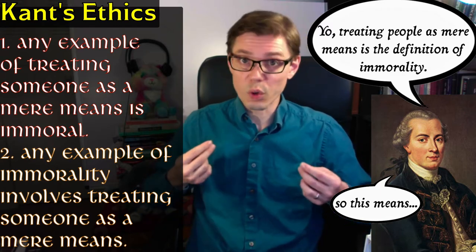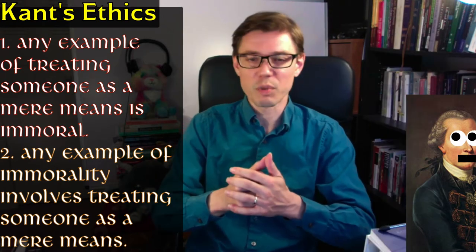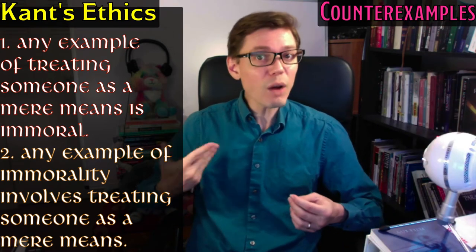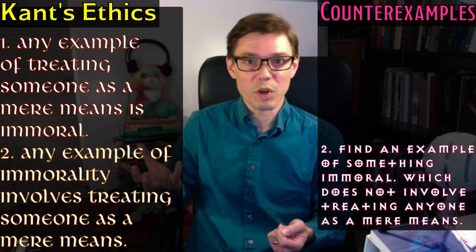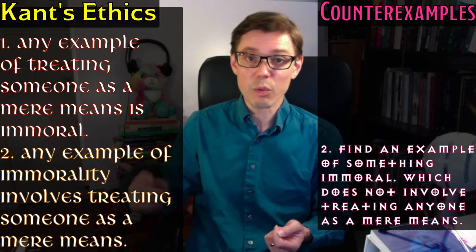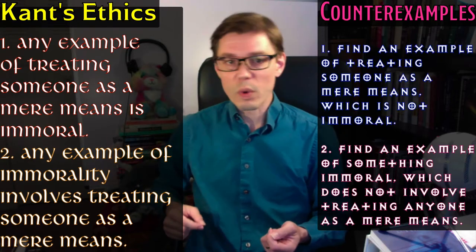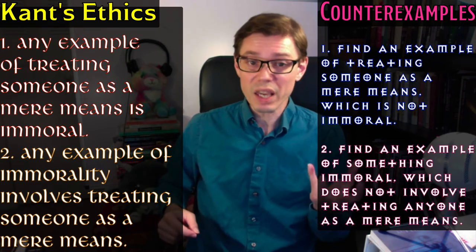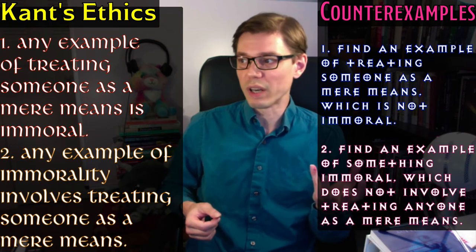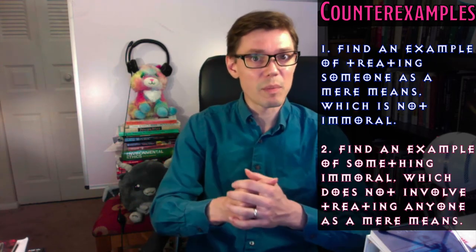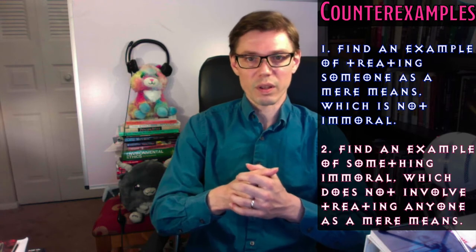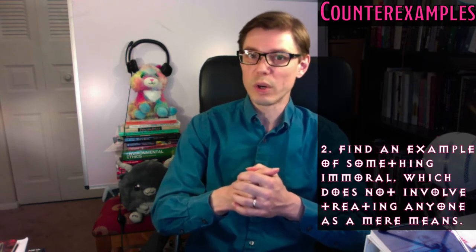So if we want to object to Kant's ethics, or at least to his conception of what's immoral, we can find counter-examples. We can try to think of a case of something immoral but that's not an example of treating anyone as a mere means — it's just immoral in some other way. That would show Kant is wrong. Or we could think of some example of treating someone as a mere means that isn't immoral — that you could actually use someone in a way that isn't morally bad. Two types of counter-examples, two types of exceptions to Kant's claim about immorality. Let's start with the idea that you can have immorality without treating someone as a mere means.